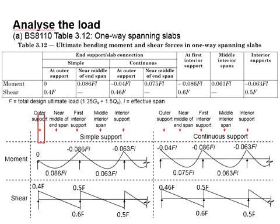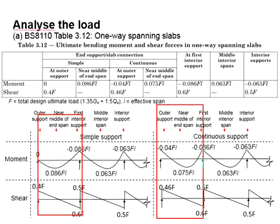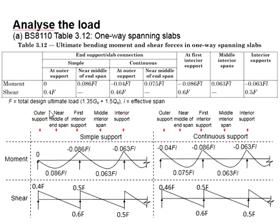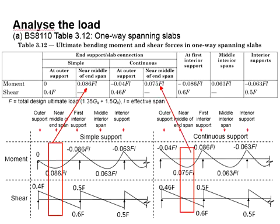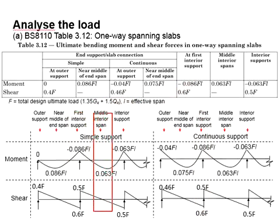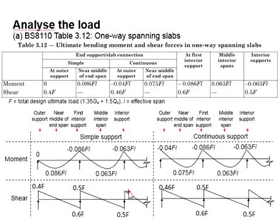In general, the end span is the last span of the slab without joining to another slab. The first support refers to the outer support. The mid span of the end span refers to the area near the middle of the end span. The mid span will be considered as the middle intermediate span, and the interior supports are given here.